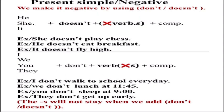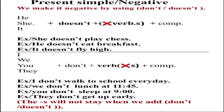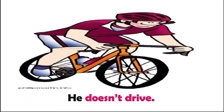Now the negative form of Present Simple. We make it negative by using 'don't' and 'doesn't'. For he, she, it — we add 'doesn't' to make the sentence negative. For I, we, you, they — we add 'don't'. For example: 'she doesn't play chess'. For 'I walk to school every day' — to make it negative: 'I don't walk to school every day'. He doesn't drive — he's riding a bike.